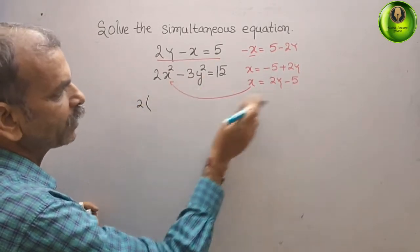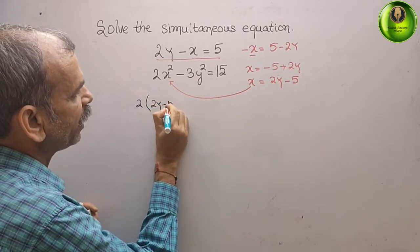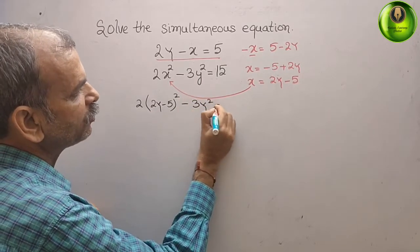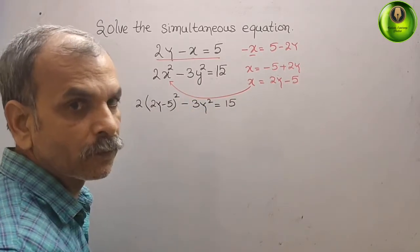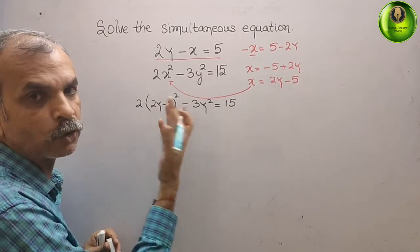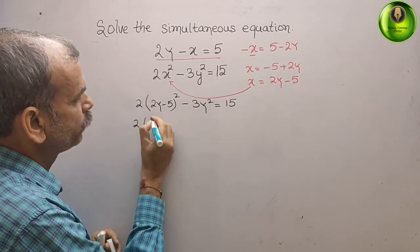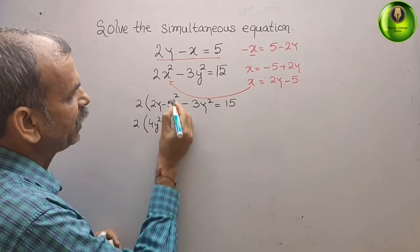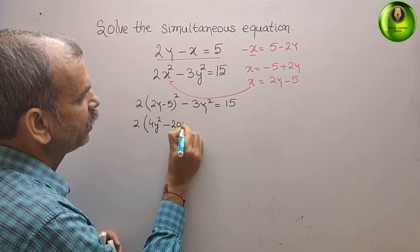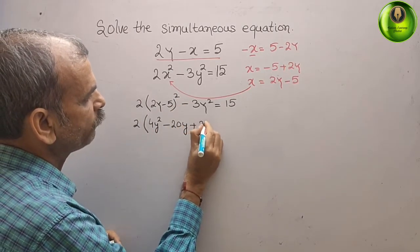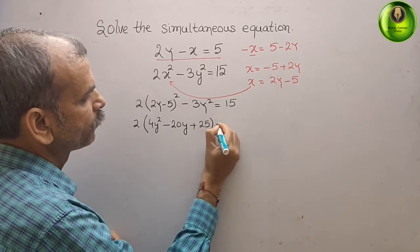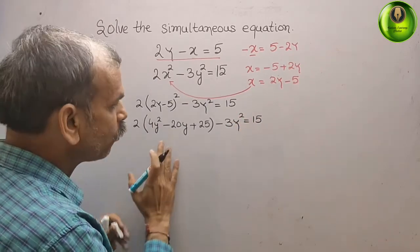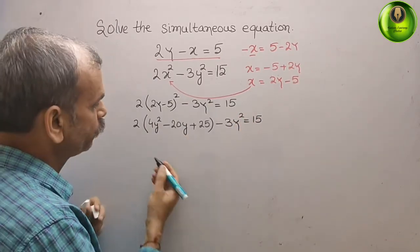Now substitute this value in place of x in the second equation. We get 2 into (2y minus 5) whole squared minus 3y squared equals 15. Expanding using the (a minus b) whole square formula gives 2 times (4y squared minus 20y plus 25) minus 3y squared equals 15.